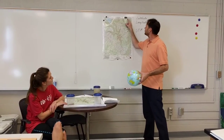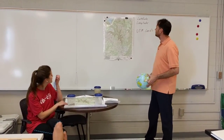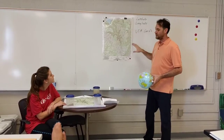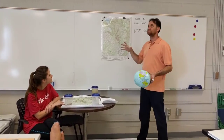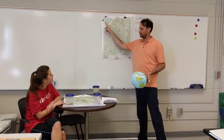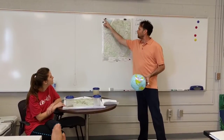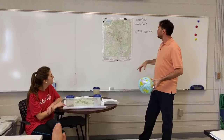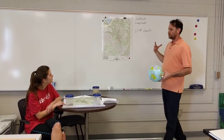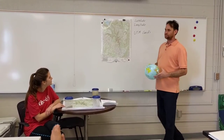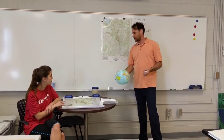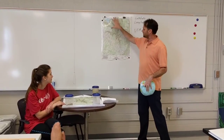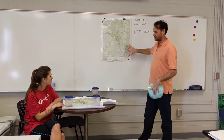This is called a seven-and-a-half-minute series topographic map, as shown at the top. That means that there's only a quarter of a degree of latitude and longitude from one side of the map to the other, and from the top of the map to the bottom. So if we want to find somewhere like your house, or maybe this building, we would want a grid system that works on a map this size.